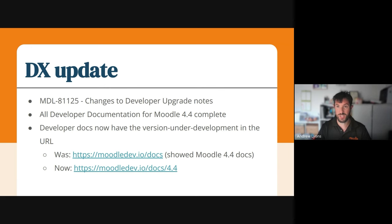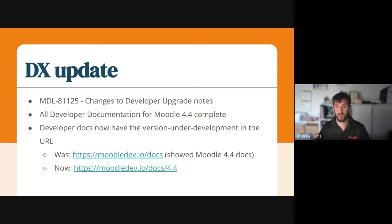As Jen mentioned, all of the developer documentation for Moodle 4.4 is now complete. I believe that's the first time that's ever happened — looking at all of the previous releases, they all still have outstanding DevDocs. I think we can put that down partially to the move to DocuSaurus, because we've removed a lot of the need to add that DevDocs label in the first place by using pull requests, so people are actively working on the documentation as they write features, and we've also removed the necessity to document some things entirely where those things can be automated.